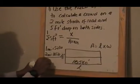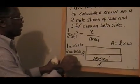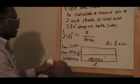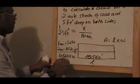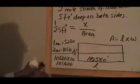So, I multiply 10,560 times 10. This would get me 105,000 feet.